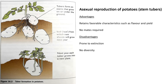For crop production, the advantages of asexual reproduction are higher yield and higher economic gains, and farmers can keep desired characteristics — same as with wild species. The disadvantage is that the whole crop can be wiped out at once if a disease strikes, because all plants are genetically identical and will all be affected, leading to extinction of that crop.